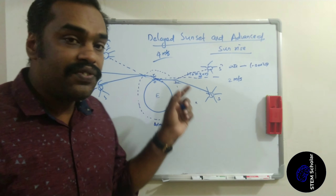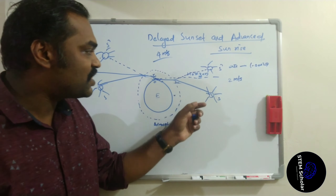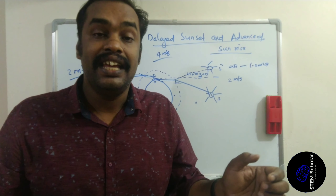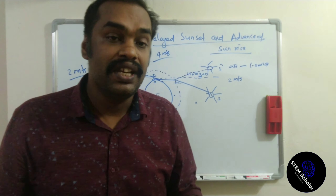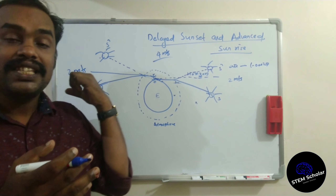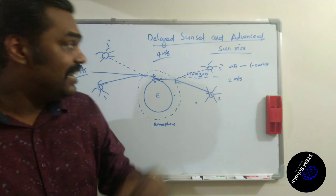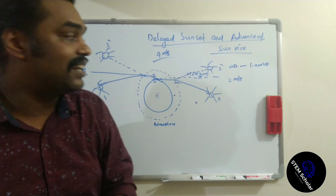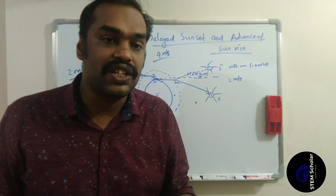Due to atmospheric refraction, there is a shift in the position of the sun by half a degree. Due to that shift, we are getting the length of the day prolonged. So the length of the day is prolonged by four minutes — two minutes from delayed sunset and two minutes from advanced sunrise — all due to atmospheric refraction.